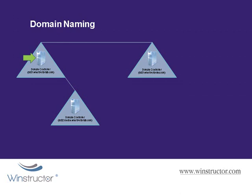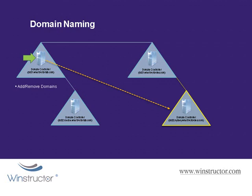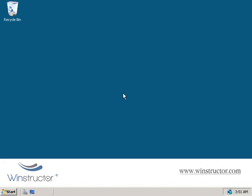The next role is the domain naming role. The domain naming operations master is responsible for adding and removing domains in your forest. Like the schema master, there's only one domain naming operations master in your entire forest, and like the schema role, day-to-day operations will still function normally if this server is down. When domains need to be added or removed, the domain naming operations master needs to oversee that change. It's also in charge when you want to rename a domain, and it's required to add or remove application directory partitions and cross-reference objects.